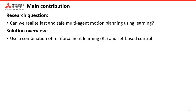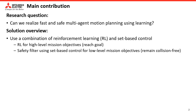We propose a fast and safe multi-agent motion planner using a combination of reinforcement learning or RL and set-based control. We use RL to tackle high level mission objectives like reaching a goal. We also use set-based control and convex optimization to design a safety filter. The safety filter helps us tackle dual level mission objectives like guaranteeing safety, especially agent-agent collision avoidance.